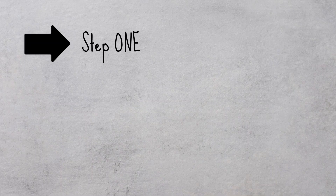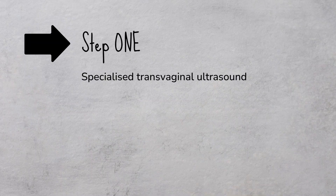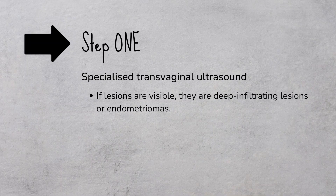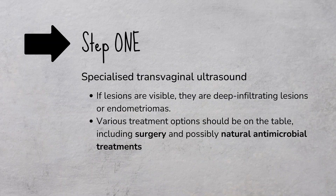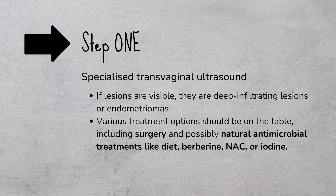Step one: if you have symptoms such as pelvic pain that suggest endometriosis, it probably makes sense to undergo the specialized transvaginal ultrasound. If lesions are visible, then it's because they're deep infiltrating lesions or endometriomas, and for those types of lesions, various treatment options should be on the table, including surgery in some cases, and also possibly natural antimicrobial treatments. Because although the microbiome research has not yet translated to new medical treatments, it can help to inform the use of natural antimicrobial treatments, such as diet changes, and the berberine, acetylcysteine, and iodine that I mentioned.